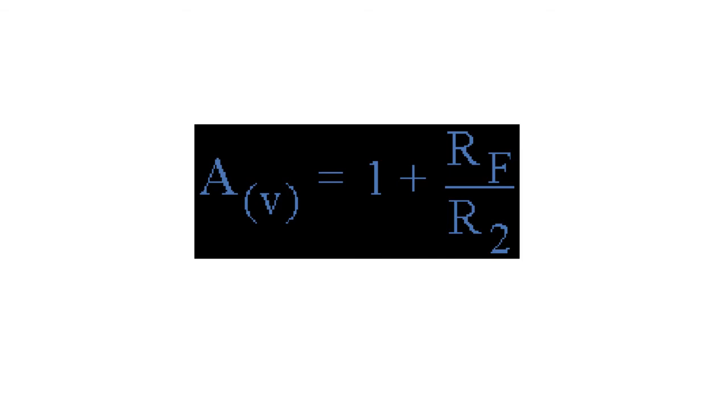Now this formula determines the gain of our op amp. What we do here is we take RF, which is equivalent to R1, and we divide it by R2 plus 1, times by your input voltage, and that would be your calculated gain.